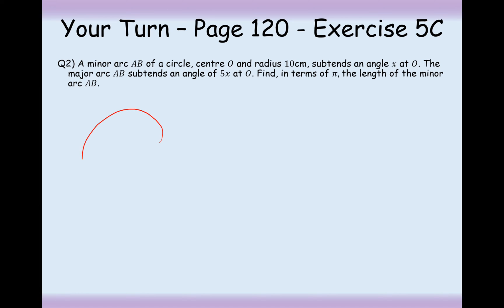All right then, let's have a go at this question here then. We've got a minor arc AB. So, we'll draw a diagram here from A to B. Radius 10 centimetres. Subtends an angle X. The major arc AB subtends the angle of 5X at O. In terms of pi, find the length of the minor arc AB.